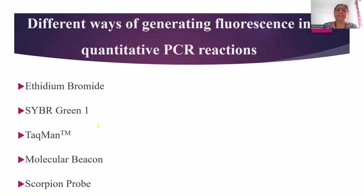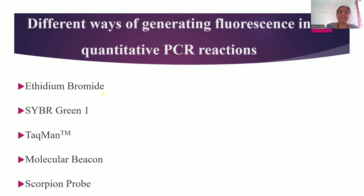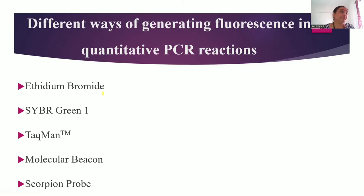There are different ways of generating fluorescence in a quantitative PCR reaction to quantify the amount of DNA. We have discussed ethidium bromide and SYBR Green 1. However, these dyes are not specifically binding to double-stranded DNA only — whenever there is a primer dimer present, these dyes can bind to it as well, giving false positive results. To overcome this drawback of ethidium bromide and SYBR Green 1, there is the use of the Taqman probe, molecular beacon, and scorpion probe.